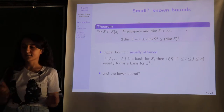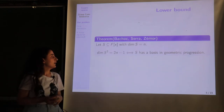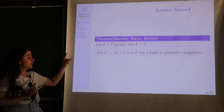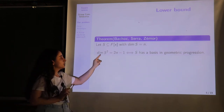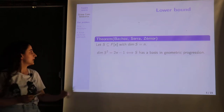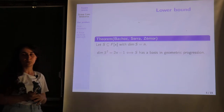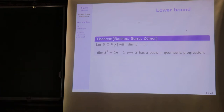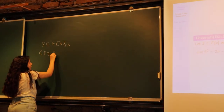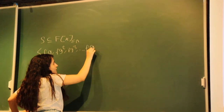We are interested in the lower bound. We have this characterization: if S has dimension n and the dimension of S² equals 2n − 1, then this value is attained if and only if S has a basis in geometric progression — meaning a basis of the form f, fg, fg², fg³, up to fg^(n−1).